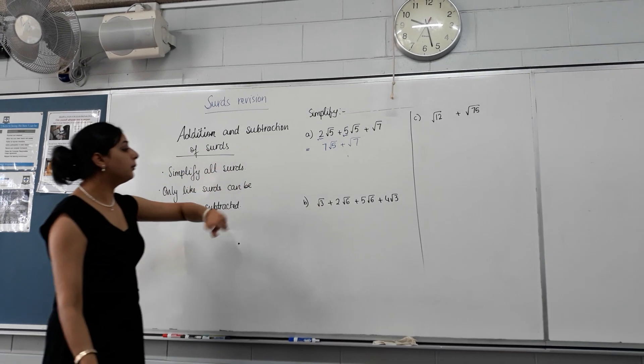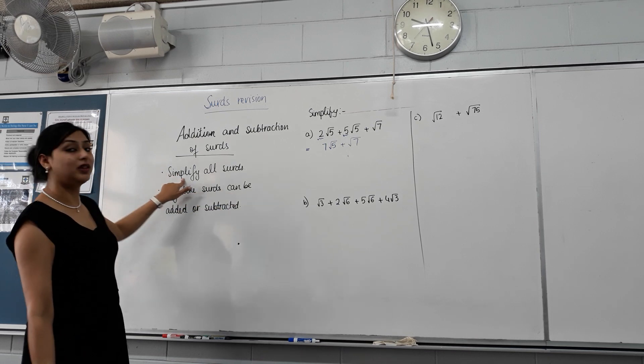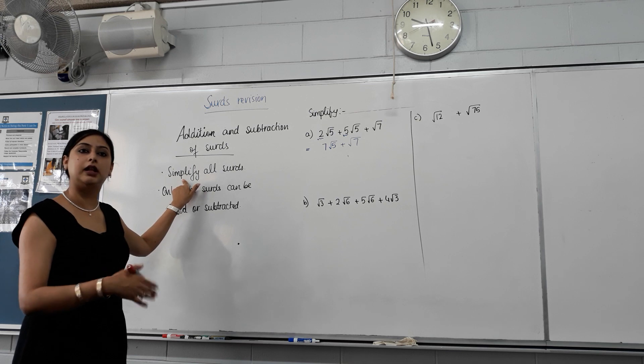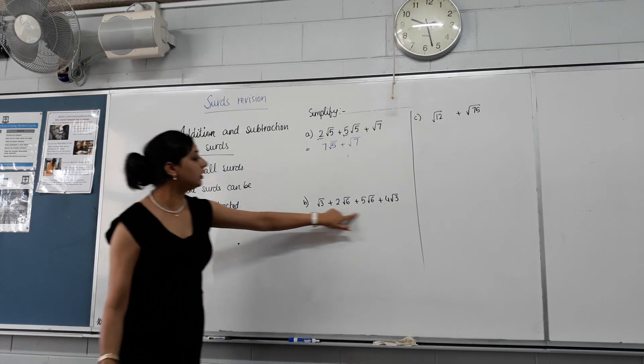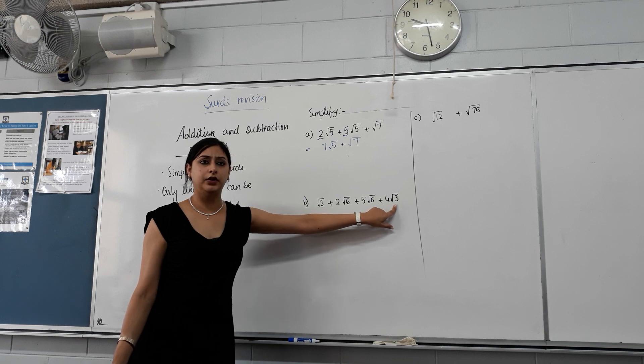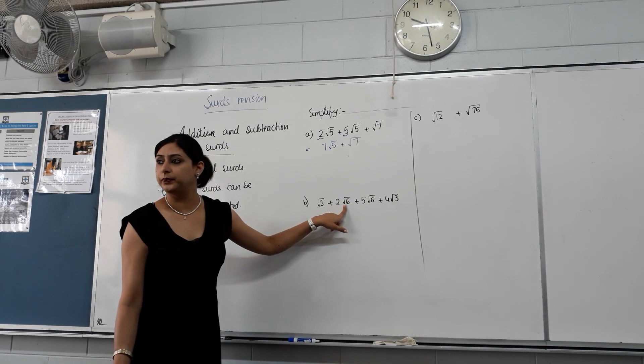Next one. But most important thing is we make sure that the surds are simplified before we actually make a decision whether they're like or not. So are all the surds simplified? Can root three be simplified further? No. Can root six be simplified further? No.